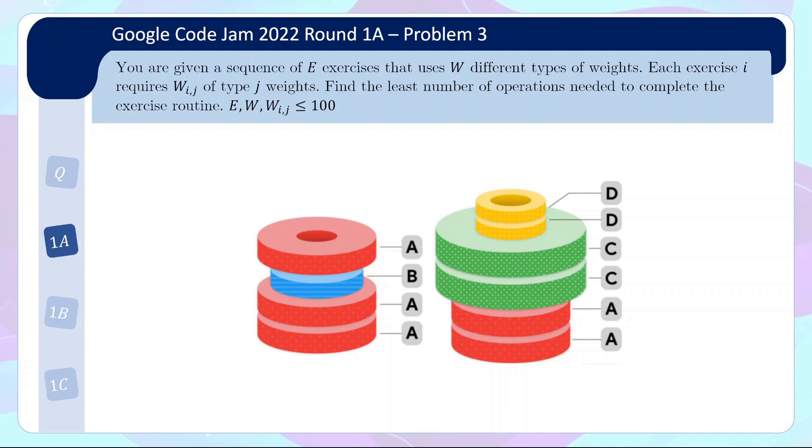So let us do a quick recap of the problem. Basically you are given a sequence of E exercises that uses W different types of weights. So for illustration here we have four types of weights which are A, B, C and D. Each exercise requires a certain number of each type of weights. For example the first exercise here requires three of type A and one of type B, whereas the second exercise requires two of type A, two of type C and two of type D. And the thing is we don't need to stack the weights in any particular order as long as the stack has the correct number of each type of weights we can do the exercise.